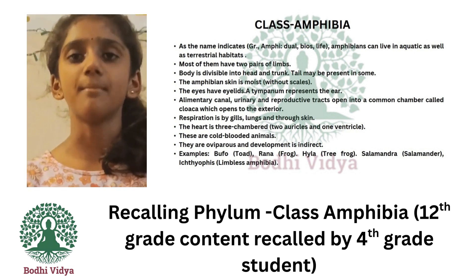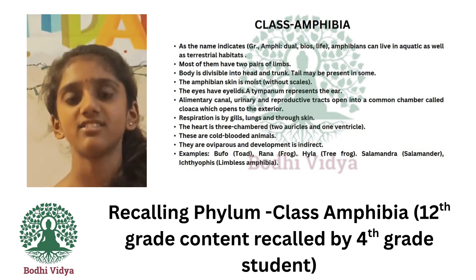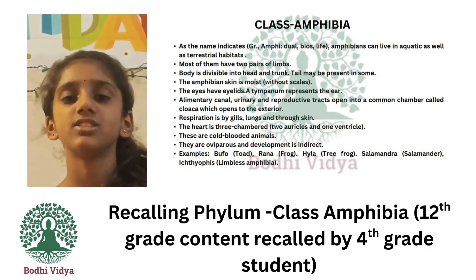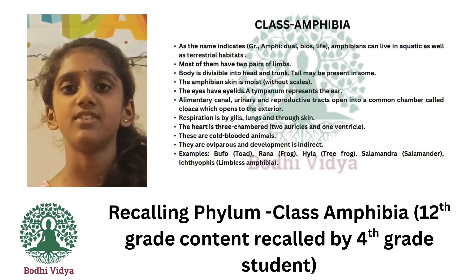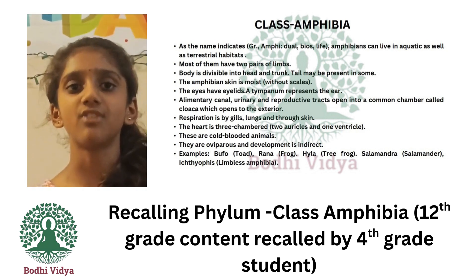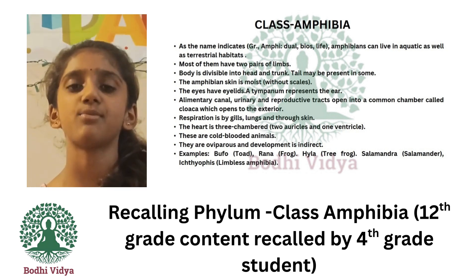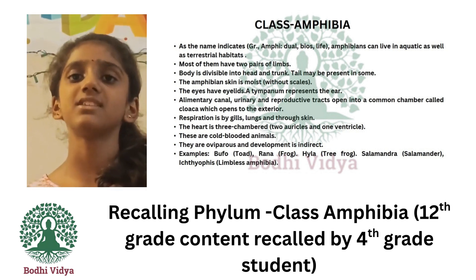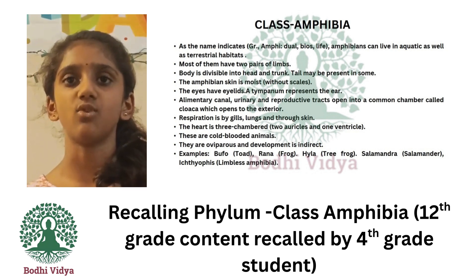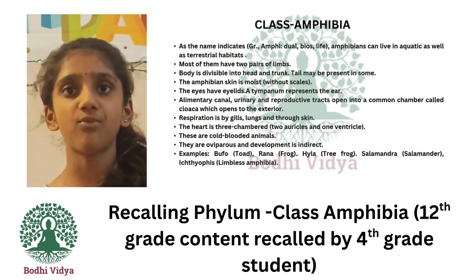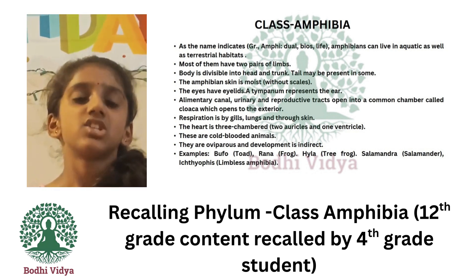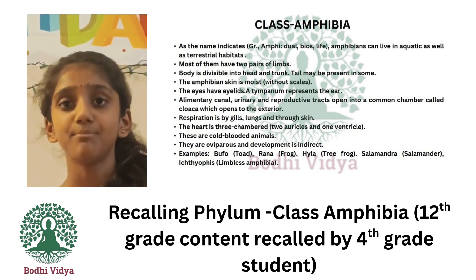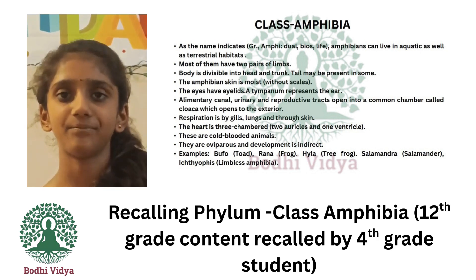Number 1: Most of them have two pairs of limbs. Number 2: The body is divisible into head and trunk; tail may be present in some. Number 3: The amphibian skin is moist without scales. Number 4: The eyes have eyelids, and a tympanum represents the ear.